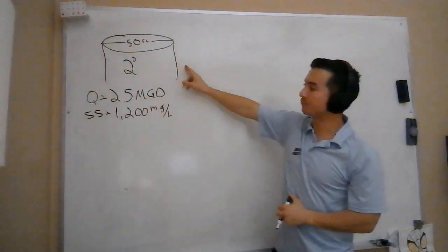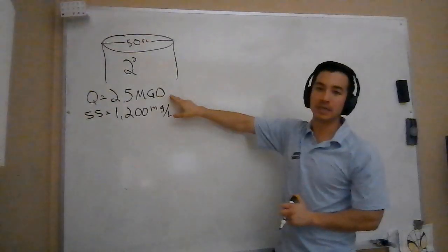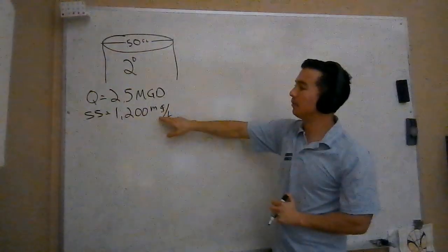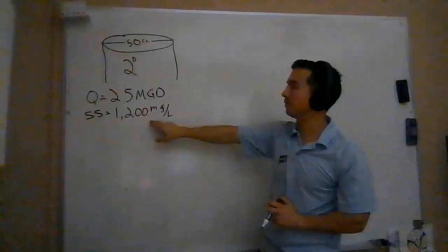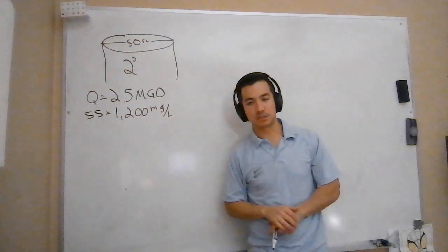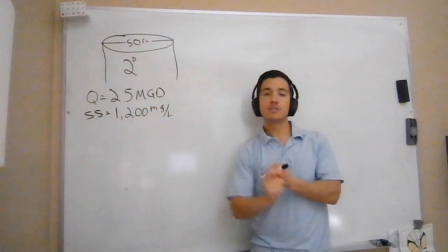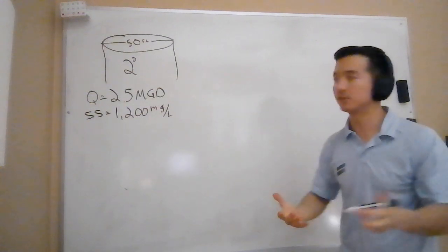So here's our secondary clarifier. It's got a 50-foot diameter, treating a flow of 2.5 million gallons per day (MGD), and we measure a suspended solids concentration of about 1200 milligrams per liter. We're going to be calculating two things here: the weir overflow rate and the solids loading rate. We'll start with the solids loading rate because we want to settle the solids out first.